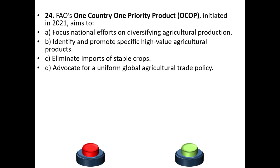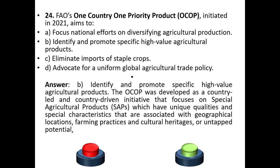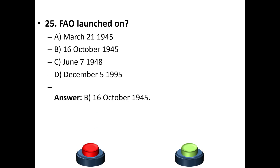Question 24: FAO's One Country One Product (OCOP) initiative, launched in 2021, aims to: a) focus national efforts on diversifying agricultural production, b) identify and promote specific high-value agricultural products, c) eliminate imports of staple crops, or d) advocate for a uniform global agriculture trade policy. The answer is option B. The OCOP was developed as a country-led initiative focusing on special agricultural products with unique qualities tied to geographical locations, farming practices, and cultural heritage.